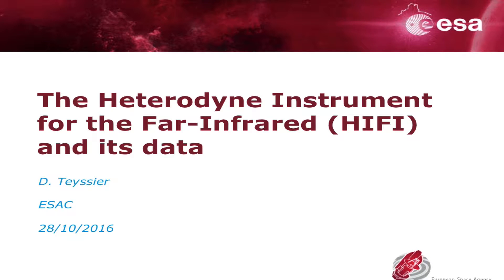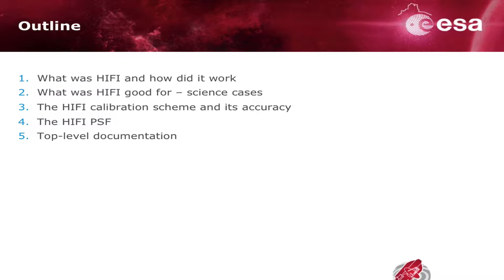This is a short introduction about the HI-FI instrument. If you're very familiar with heterodyne detection, it's not going to be very helpful, but there are some tricks in this instrument especially compared to the previous ones you've heard about — PACS and SPIRE. I'm going to explain the peculiarities of this instrument, the specific science cases for which you'd be most interested in using it, the way we calibrated data, and because HI-FI is a single pixel on the sky, what its beam on the sky was.